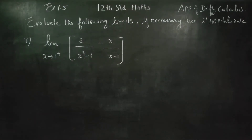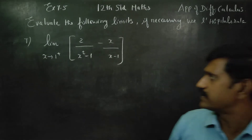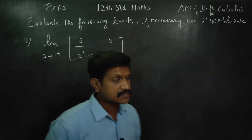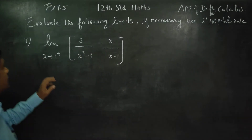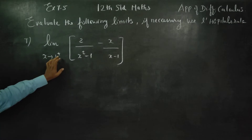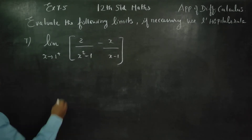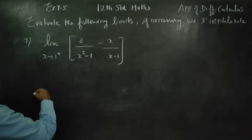Hello 12th standard students, I am Metro Karanagaran. In exercise number 7.5, sum number 7, limit x turns to 1 plus — that is your right hand side limit.